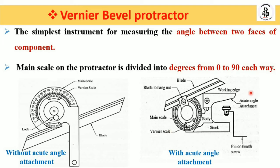Now we will see the bevel protractor with the acute angle attachment. You can see here the acute angle attachment. This is one of the working edges, this is my blade, which also has a blade edge. According to the shape of the measurement or two adjacent sides of the components, it is adjusted with the blade edge and working edge, and you can take the reading from the main scale as well as the vernier scale.